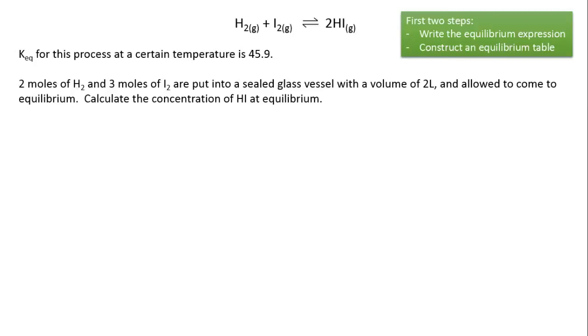hydrogen and three moles of iodine are put into a sealed glass vessel with a volume of two liters and allowed to come to equilibrium, and we're asked to calculate the concentration of hydrogen iodide at equilibrium.